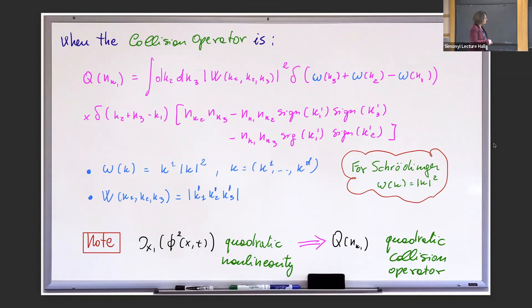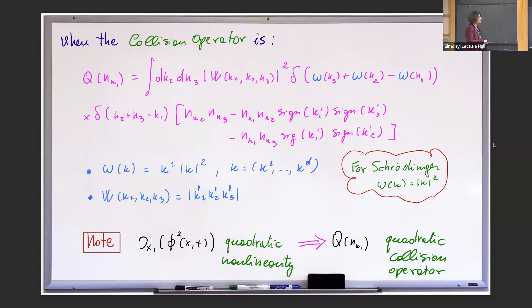This other delta is also a function. Now the omega is the dispersive function. In our case, if you remember, we have a Laplacian — that's K-squared when you take the Fourier transform — and then a derivative with respect to the first coordinate, which brings down the first component of the frequency. So omega_K equals K_1 times |K|^2. Just to compare: for NLS, omega is just |K|^2 because we only have the Laplacian.